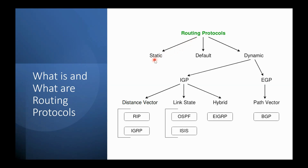The routing protocol categories — there are three: static, default, and dynamic. Static is the one which we need to configure manually. As a network administrator, I need to add the network information of my own router as well as my neighbor router. For example, in an auditorium, I need to tell my name and also want to know others' names so I can interact with them.